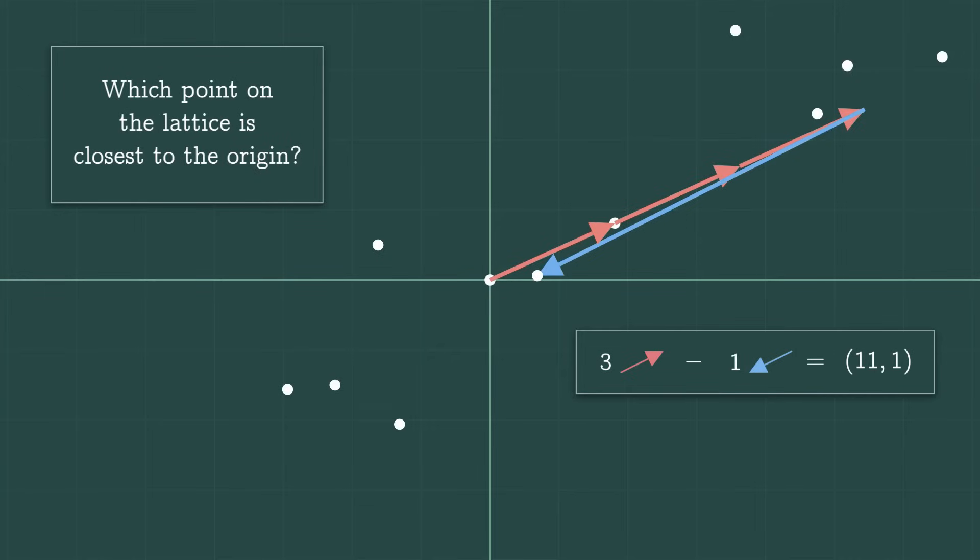Yes. For example, eight red minus three blue vectors is four negative 10, which is slightly closer to the origin.